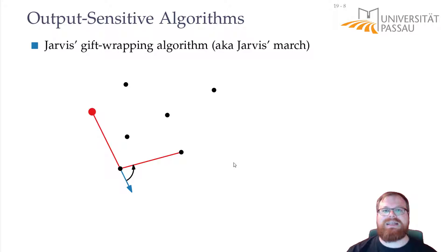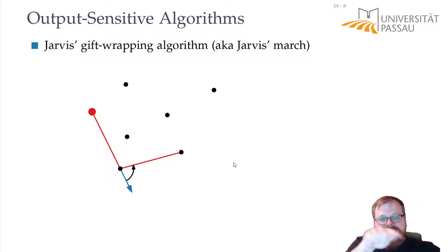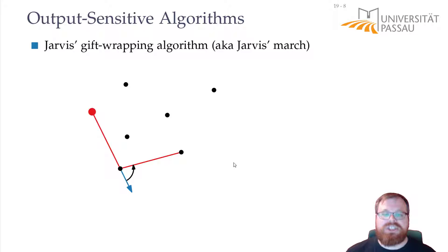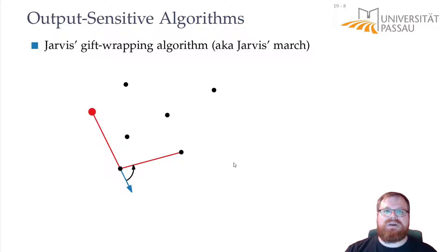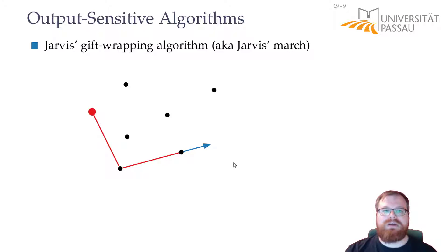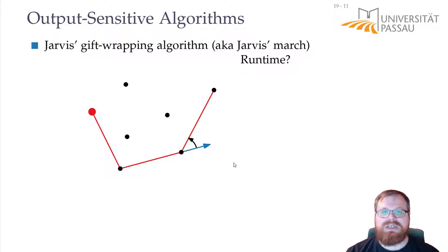But there is a better way to analyze the running time. If we have a point set where only three vertices are on the outside, then after three steps we are already done. We find those three edges in O(n · 3) = O(n) time. This is what we call output-sensitive algorithms, where the running time depends not only on the input but also on the size of the output. In this case, the running time is O(n · h), where h is the number of vertices on the convex hull.